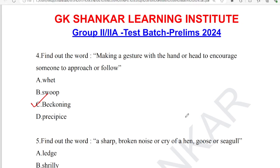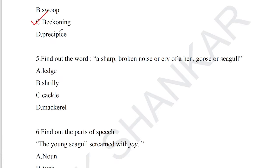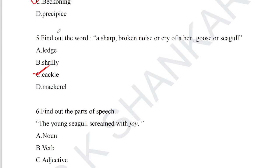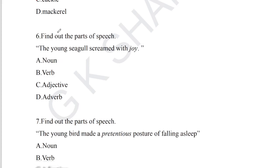Question number 5: find out the word — 'a sharp broken noise, cry of a hen, goose or seagull.' Option C is the answer: Crackle. Crackle is the sharp broken noise, the cry of a hen or seagull. Mackerel is a fish; ledge is a steep area. These are particular words from 'The First Flight' written by Liam O'Flaherty.